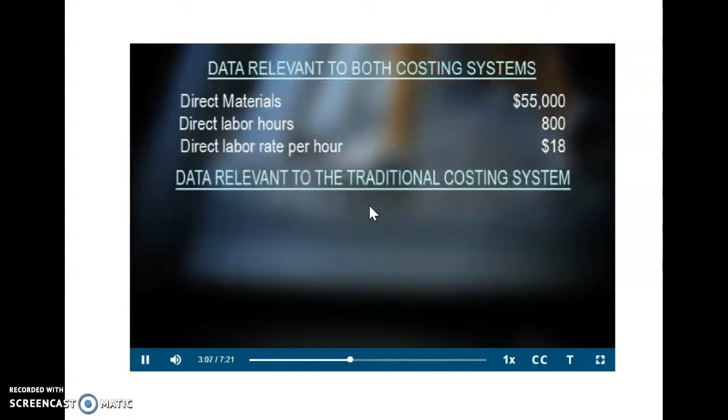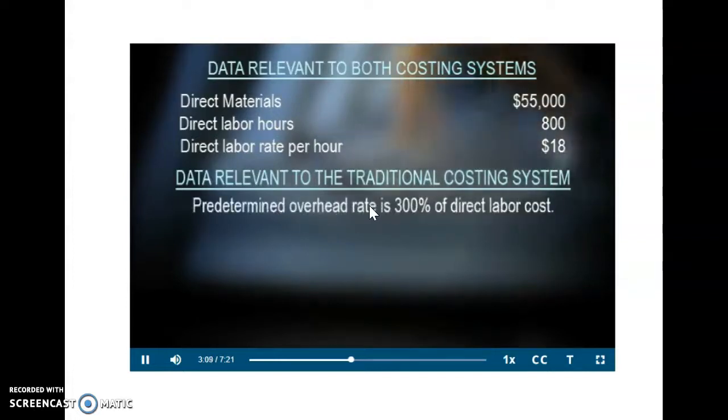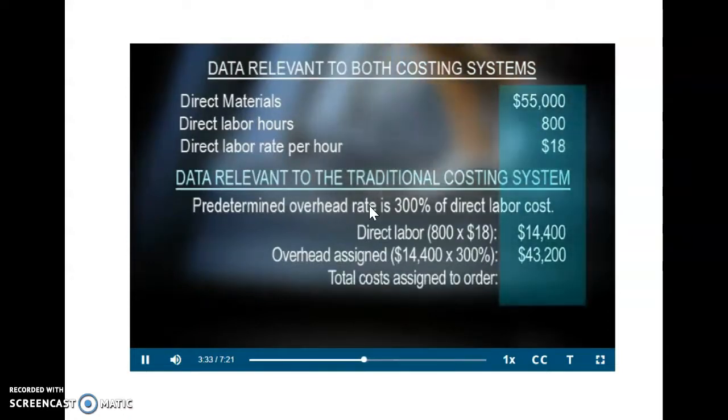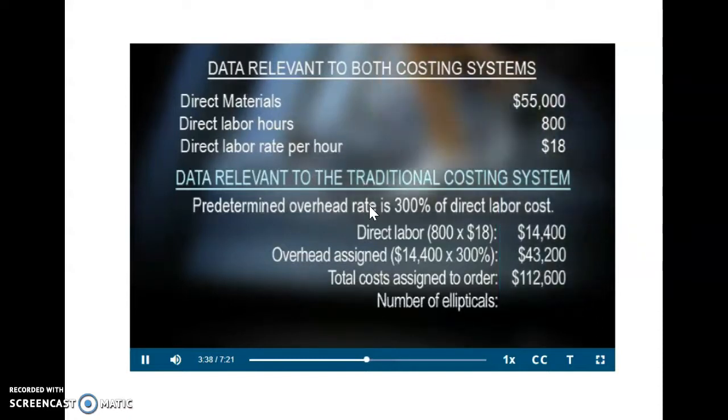In this case, the predetermined overhead rate is 300% of direct labor cost. So, doing the math, we have 800 direct labor hours times $18 direct labor rate per hour equaling $14,400. We multiply that by our predetermined overhead rate of 300% to get $43,200. Adding those up, our total costs assigned to this order equals $112,600. Divide by the number of elliptical trainers, which is 140, and we get a cost per unit of $804.29.